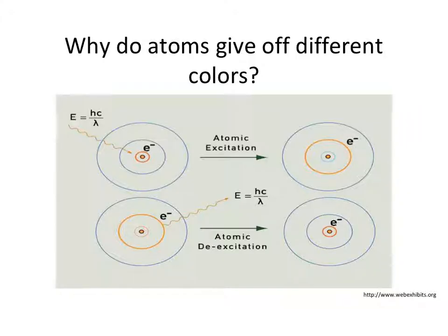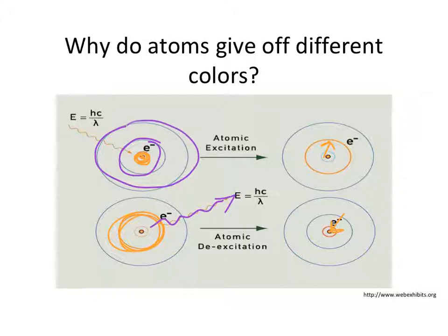So why do atoms give off different colors? Maybe it jumps from this spot right here in that first energy level up to the second energy level. So that's atomic excitation. But then it jumps from the second energy level back down to the first energy level. When it falls back down to a certain energy level, then it gives off the light. So he says, since there's only certain colors of light that are given off, there must be only certain places that an electron can jump and then fall back down to.